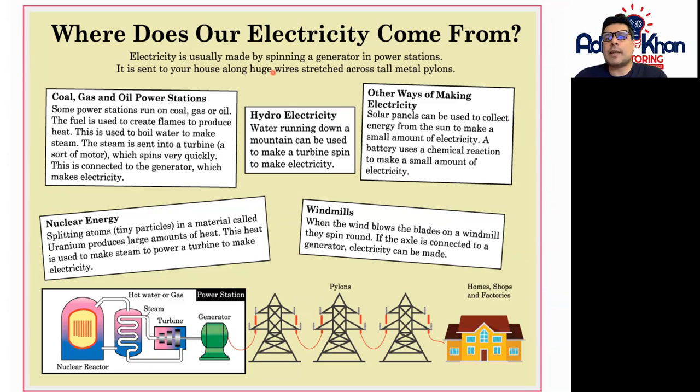Electricity is usually made by spinning a generator in power stations. It is sent to your house along huge wires stretched across tall metal pylons. These are the metal pylons that we're talking about. So electricity is usually made by spinning a generator.